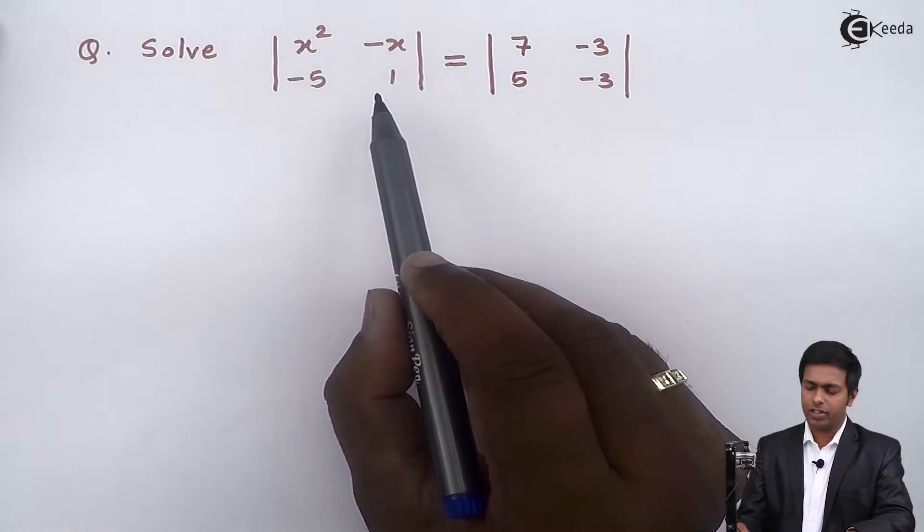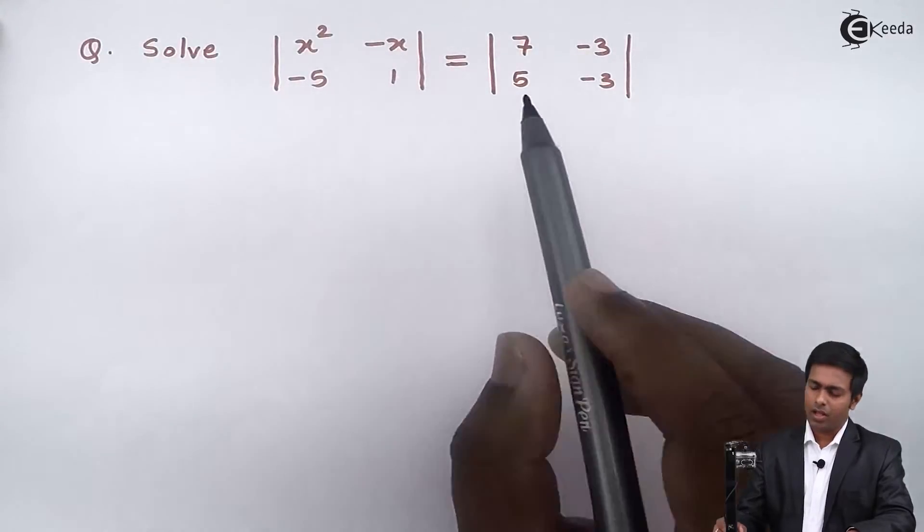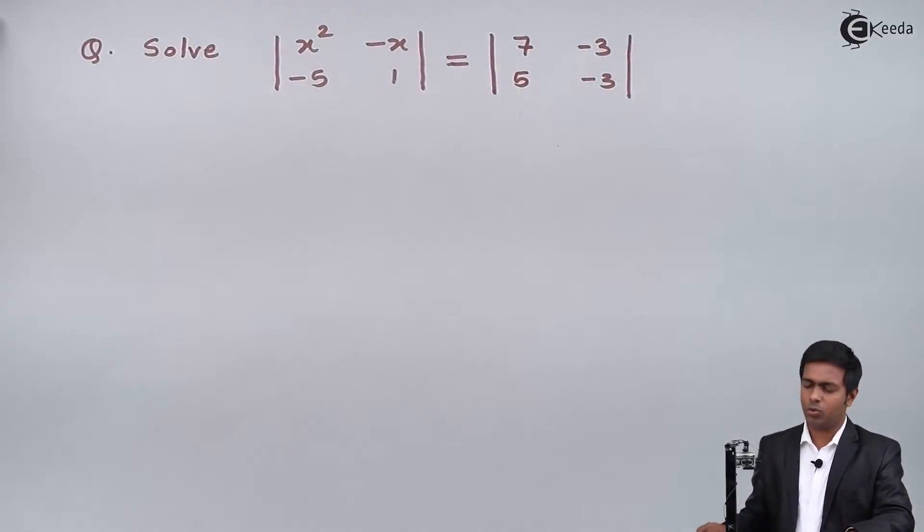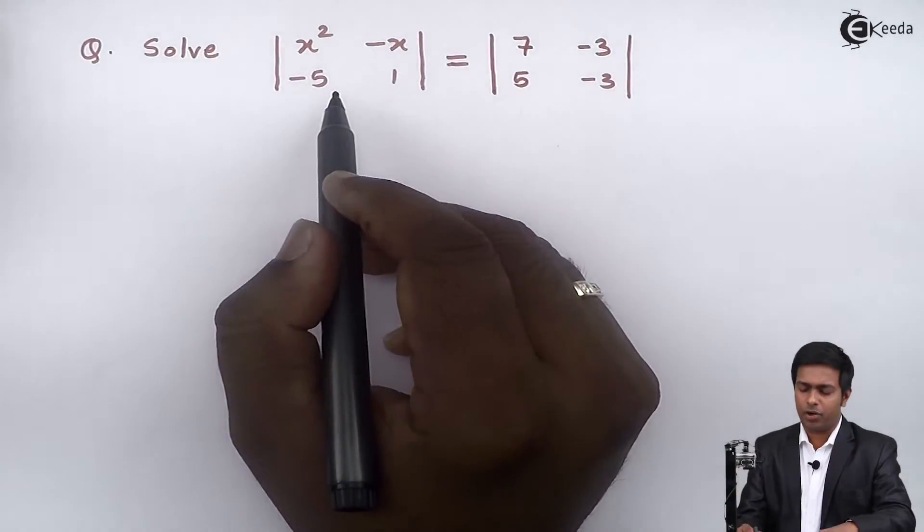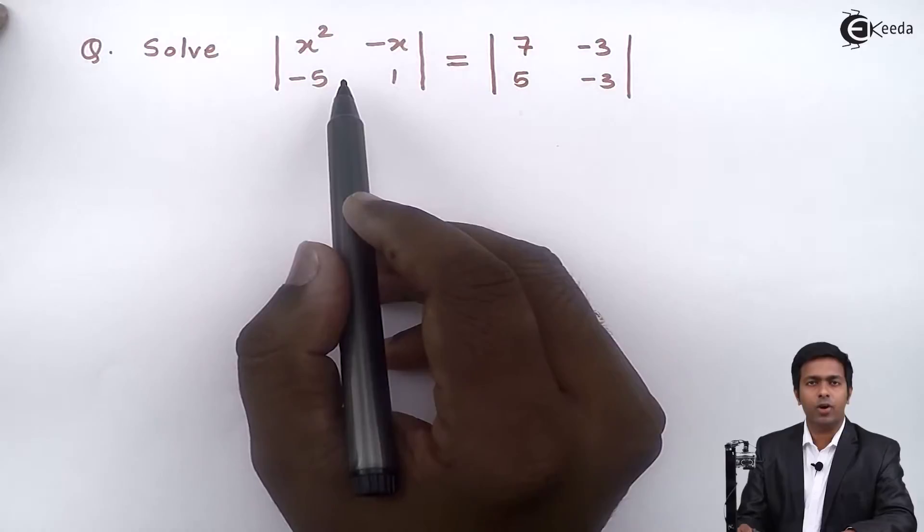So if you will observe here, then on the left hand side we have determinant of 2 by 2 order and on the right hand side also we have a determinant of order 2 by 2. So first of all we will find out the value of the determinant on left hand side and right hand side and then we will evaluate the value of x.